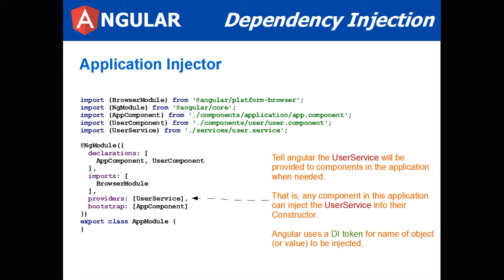You can start defining providers in components or you could define them at an app module level. You could have all your components use a user service using the user service class to instantiate that object within your app module. And if you want to override that for a particular component, you can declare the provider at the component level.